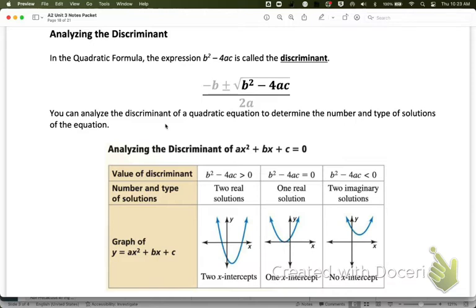As we saw in the examples using the quadratic formula, we can sometimes get two different solutions, plus or minus, that don't have an imaginary part, so they're two real solutions. We saw an example where we just got one single solution, and we saw examples where we got two imaginary solutions.